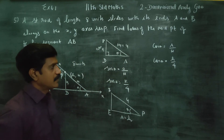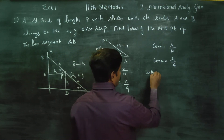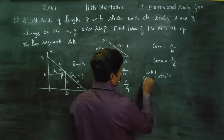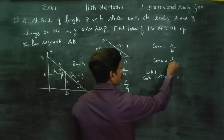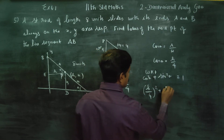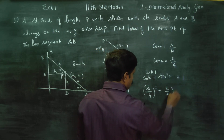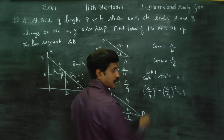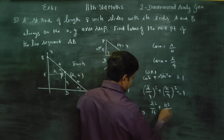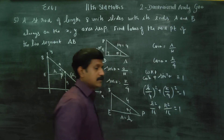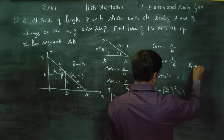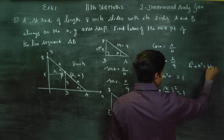Cos theta is ready. We know that sin²θ + cos²θ = 1. Therefore, (K/4)² + (H/4)² = 1, which gives H² by 16 plus K² by 16 equals 1. Multiplying through by 16, H² + K² = 16.